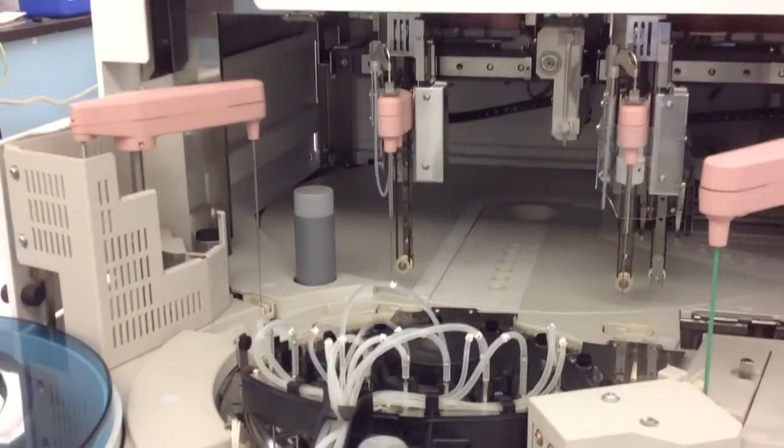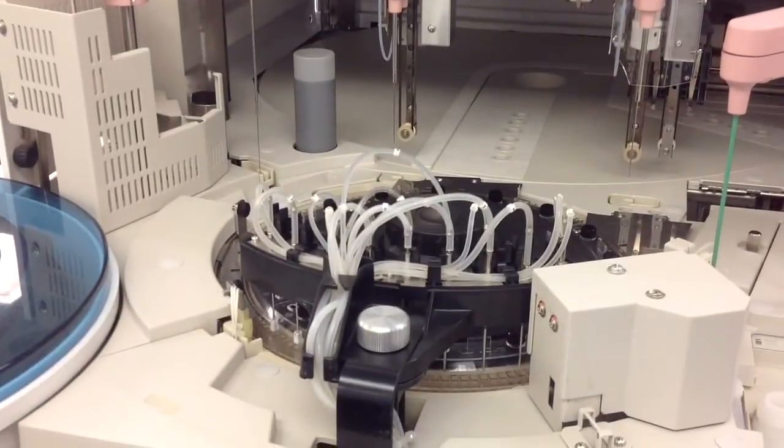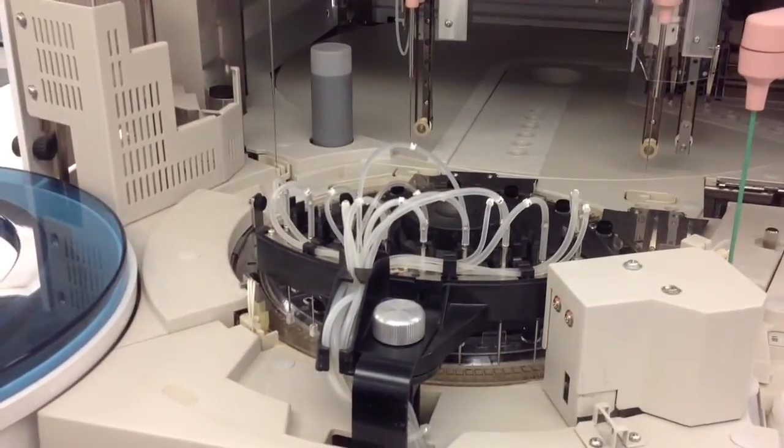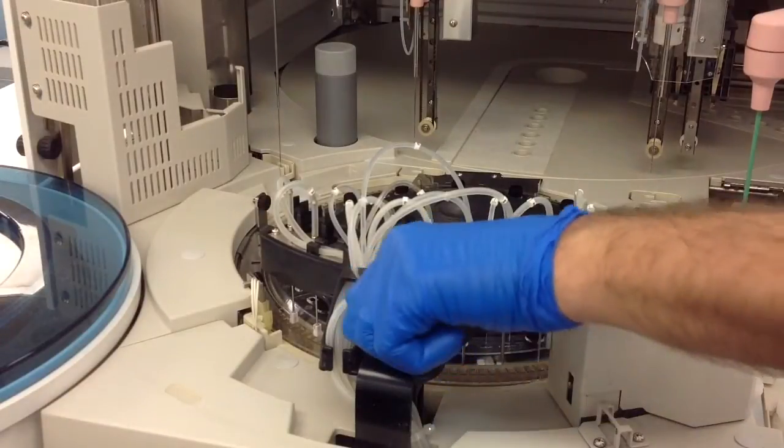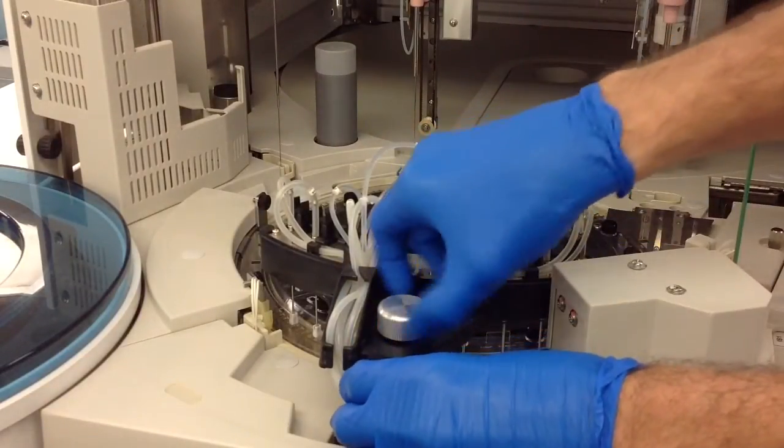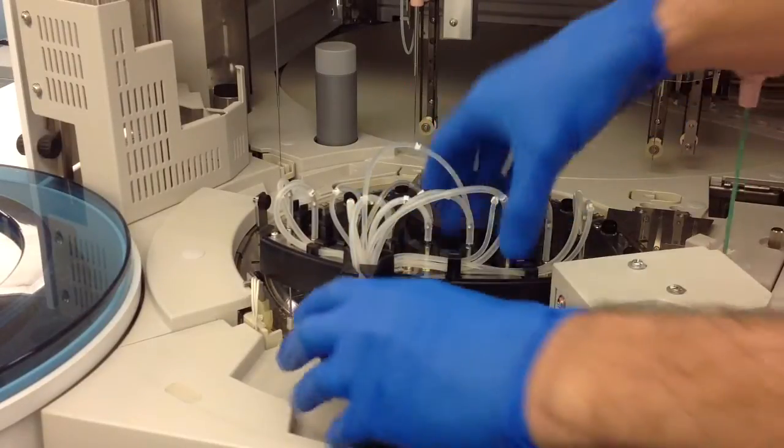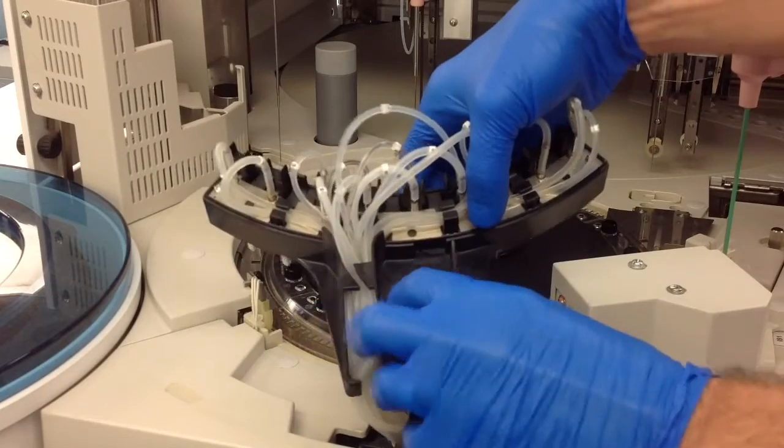After you've cleaned all the probes with alcohol, the next step is to go ahead and worry about the reaction cell cleaning station and you have to go ahead and unscrew that. You don't really have to do this, you could just try and clean it without undoing it, but just so you can see it better I decided to undo it.